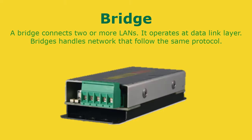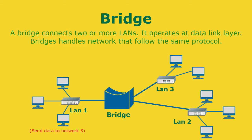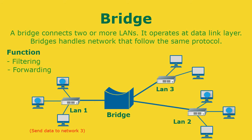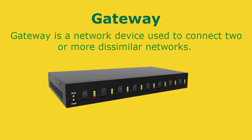For connecting between different networks, we also use bridges and gateways. A bridge connects two or more LANs and operates at the data link layer. A bridge can handle networks that follow the same protocol only. Unlike a hub, when a frame arrives, the bridge extracts the destination address from the frame header and looks it up in a table to see where to send the frame. A bridge only outputs the frame on the port where it is needed and can forward multiple frames at the same time. Filtering, forwarding, and blocking of frames are functions of bridges.